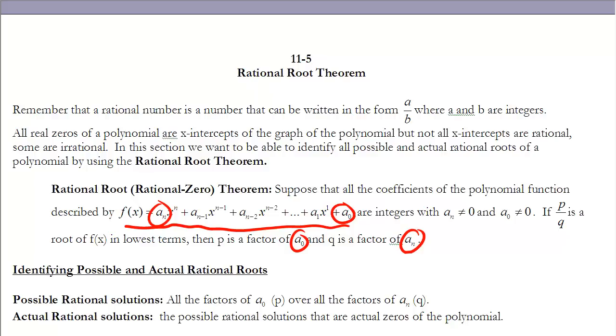If p over q is a root of f of x in lowest terms, then p is a factor of a sub 0 and q is a factor of a sub n. In other words, if I'm looking for the possible rational zeros of any polynomial, I know that they'll be of the form p over q, where p is a factor of this constant. Remember, a sub 0 is the constant, the value with no x term on it. And q will be factors of a sub n, or the leading coefficient.